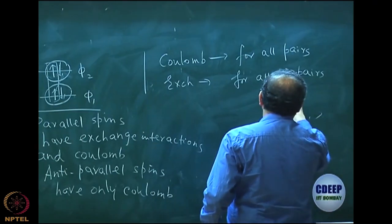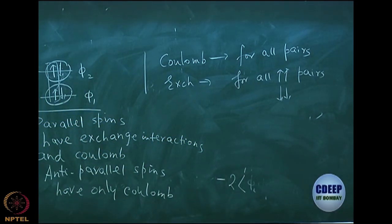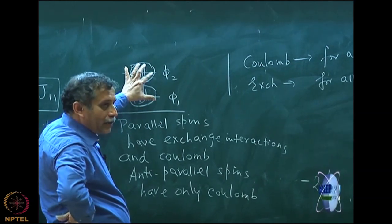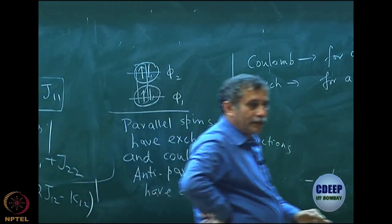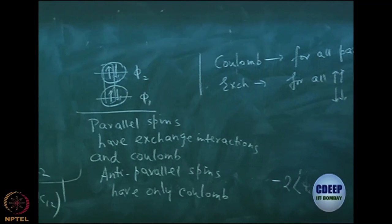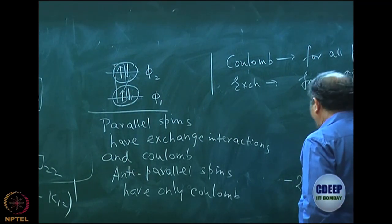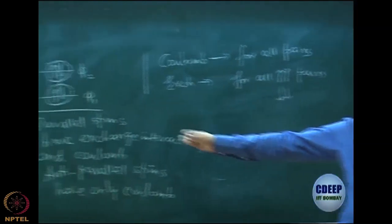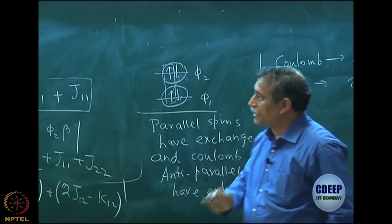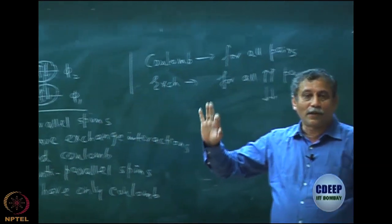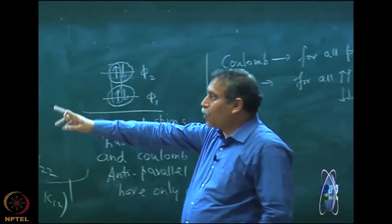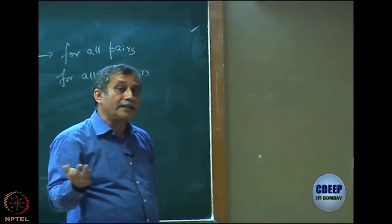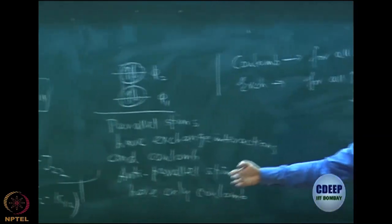Note that when I say this, it is in terms of space orbitals J and K after spin integration. Coulomb is for all pairs; exchange is for parallel pairs only. This result — derived by spin integration for closed shell starting from Slater's rule — is valid for any single determinant. Slater's rule is valid for any single determinant, and the result I get is a fairly general result.